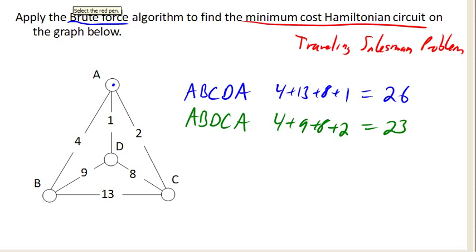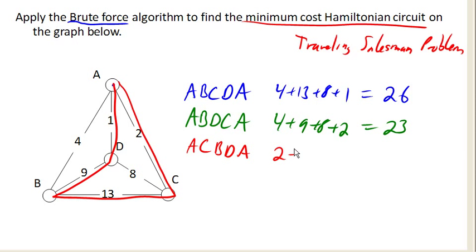And that's A, C, B, D, A. This is different than our first one. The first one we went A to B. So this was A, C, B, D, A. So that's 2 and 13 and 9 and 1, has a cost of 25.